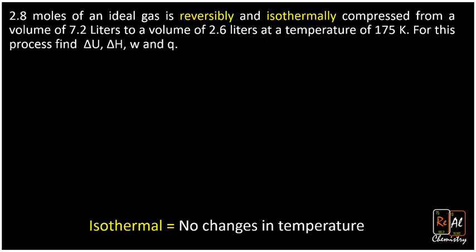Let's take a look at a problem that includes an isothermal compression. It says 2.8 moles of an ideal gas is reversibly and isothermally compressed from a volume of 7.2 liters to a volume of 2.6 liters at a temperature of 175 Kelvin. For this process, find delta U, delta H, W, and Q.